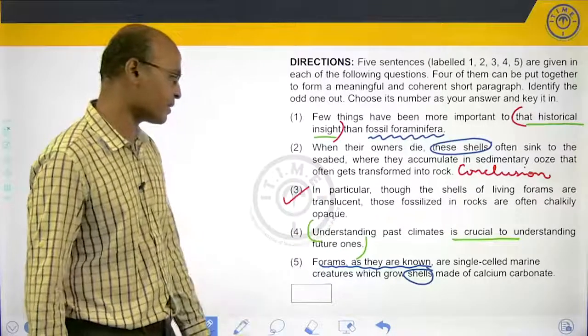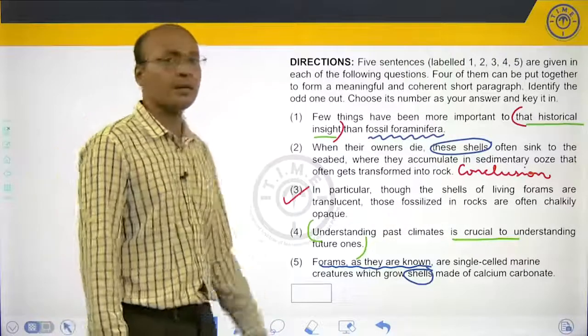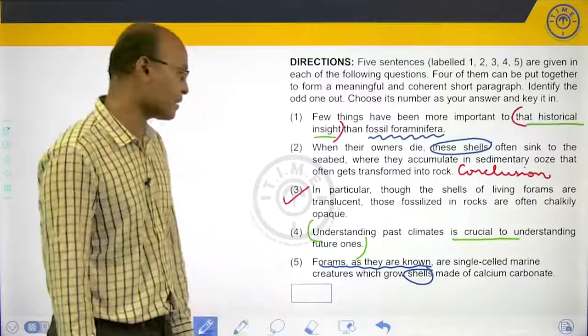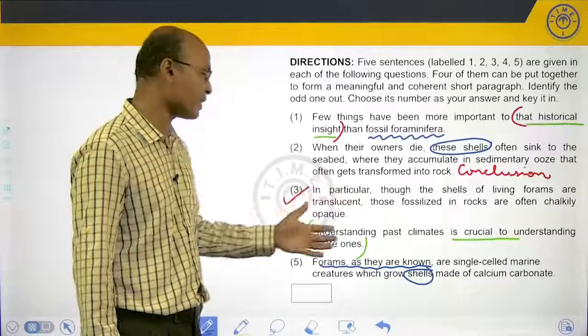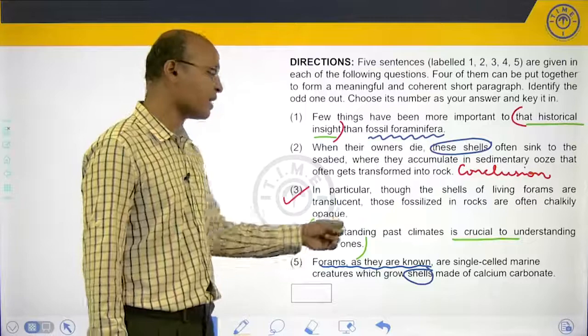Which is the standalone sentence or which is the general sentence that can begin the paragraph? The paragraph talks about forums and shells and a lot of other ideas. The fourth one is a general umbrella kind of statement: understanding past climates is crucial to understanding future ones.